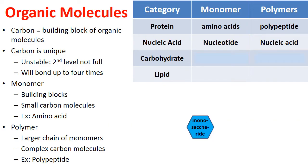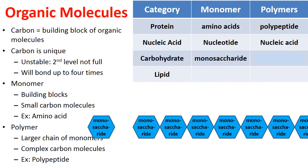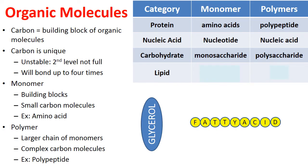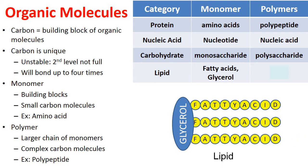Here's another monomer called a monosaccharide. 'Saccharide' simply means sugar, and 'mono' means one — so here's one sugar. When a monosaccharide bonds with a bunch of other monosaccharides, it creates a polysaccharide. These are the monomers and polymers of carbohydrates. Lipids are a little more tricky because there are actually two monomers. Lipids are made from a long chain called a fatty acid and a molecule called glycerol. When a glycerol bonds with several fatty acids, this makes up a lipid.